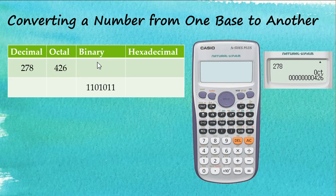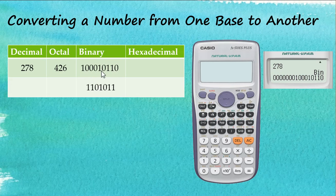Now, how about in binary? We tap on binary, and this number becomes 10010110. And the last one is hexadecimal — we tap on HEX, and in hexadecimal, 278 is written as 116.